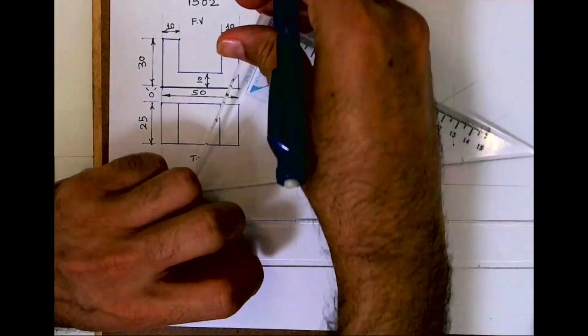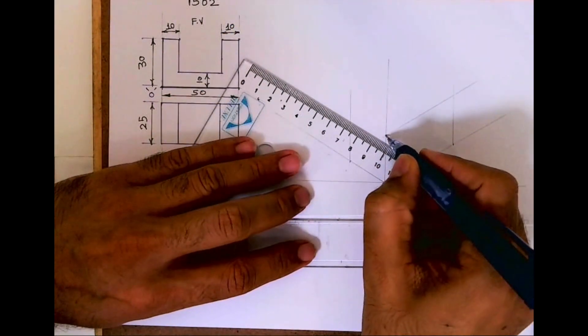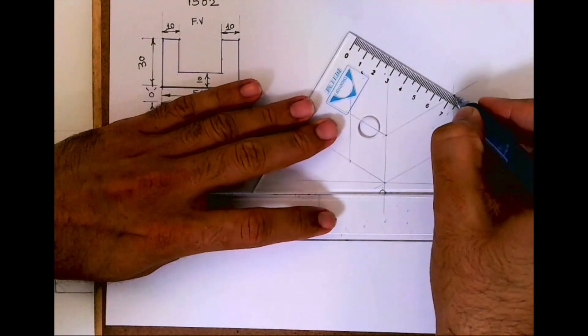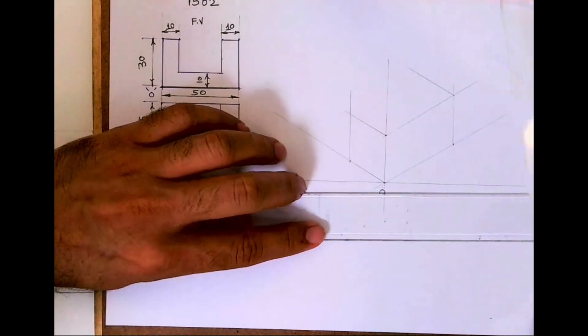So what we have done, we have done the layout. So always remember, whenever you start any isometric, first you should draw layout - length, width, and height box - and it will be light.